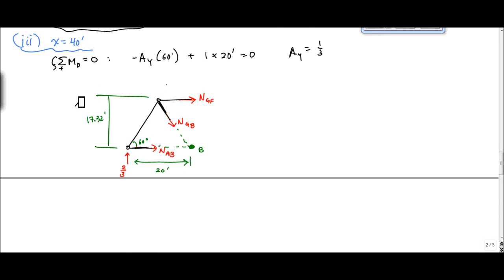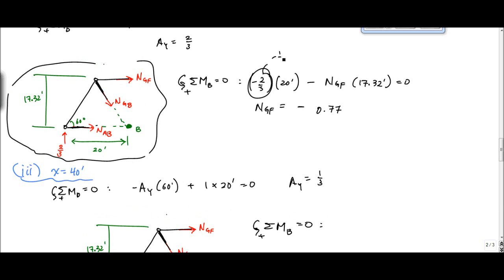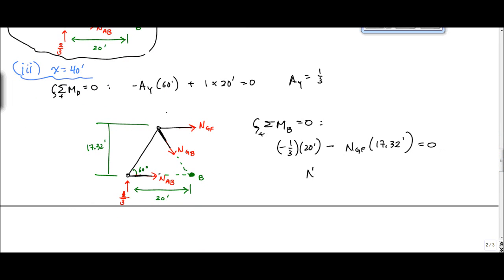And instead of having the two-thirds business, now we have here, this is one-third. This will be one-third when the load is at 40 feet. This is now one-third. And again, using method of sections, we have this section drawn out. And you apply sum of the moments about B as we discussed in part one. And the equation is essentially the exact same thing, except this number becomes negative one-third. And so here, this would be minus one-third times 20 feet minus NGF times 17.32 feet.